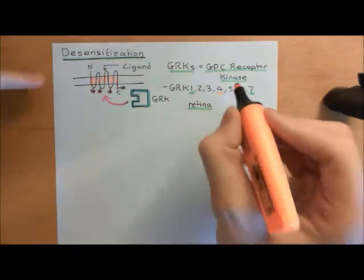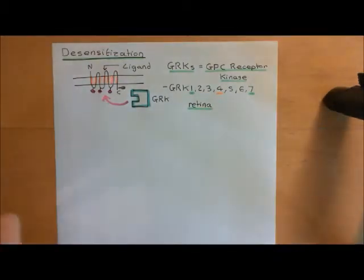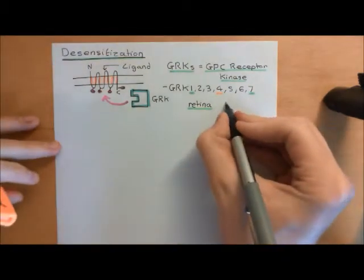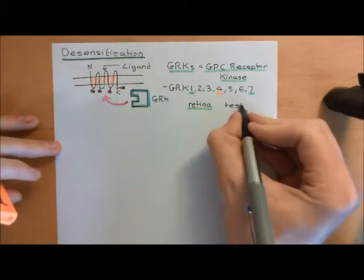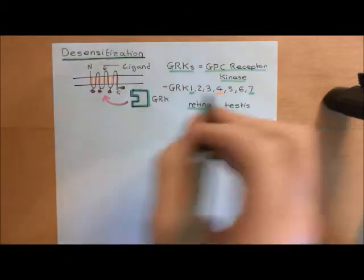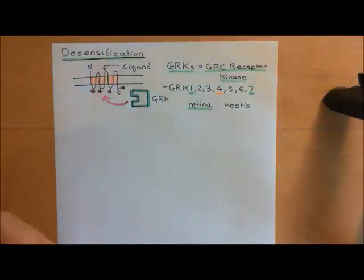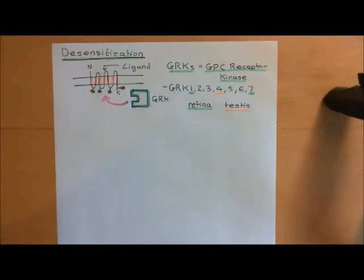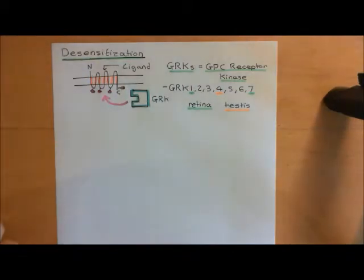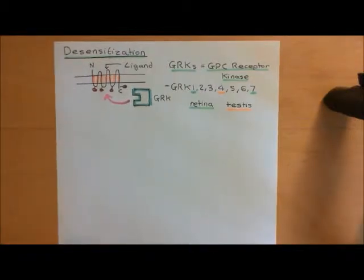GRK4 has a really limited expression profile — it's only found in the testes. The other four — GRK2, GRK3, GRK5, and GRK6 — are the ones which are found everywhere else in the body, and they service the rest of the body.